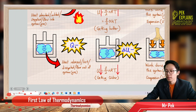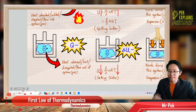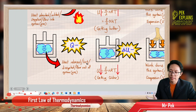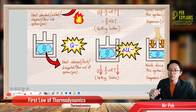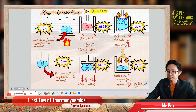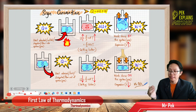When is Q negative? Q is negative when heat is lost — when heat is released, lost, dissipated, or flowed out of the system or the gas. The system itself is the gas. So when heat is lost, we put Q negative. In short: Q is positive when heat is absorbed; Q is negative when heat is released or lost.